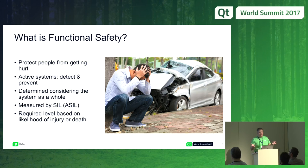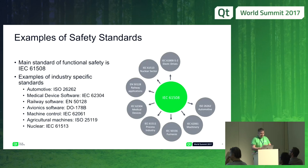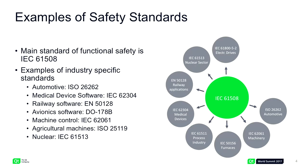The higher the level, the higher the requirements for the software, hardware, and other building blocks of the system. And conversely, the lower the level, the easier it is to create the system. Some examples of standards are shown in the picture. IEC 61508 could be seen as the mother of all functional safety standards. All other standards are either derived from it, extend it, or are directly based on it.